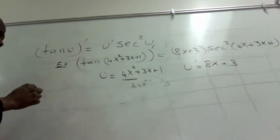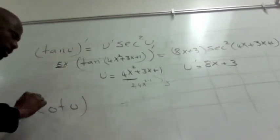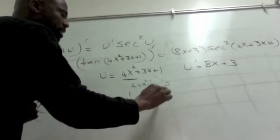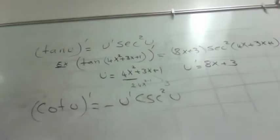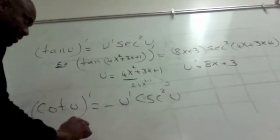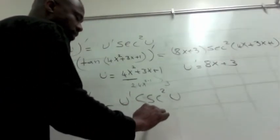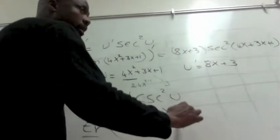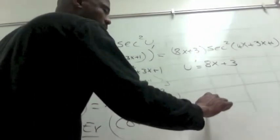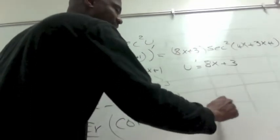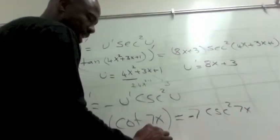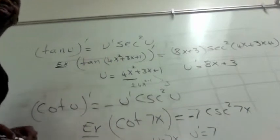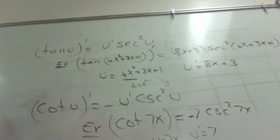The next one: cotangent of u prime is negative u prime cosecant squared of u. Example: cotangent of 7x. Here u is 7x and u prime is just 7. So cotangent of 7x prime equals negative 7 cosecant squared of 7x. Note that the negative comes from the formula — all the co-functions have a negative sign.